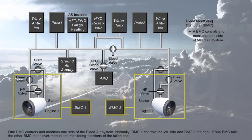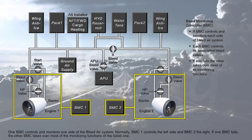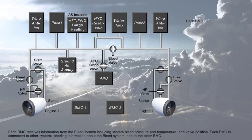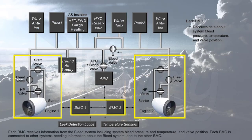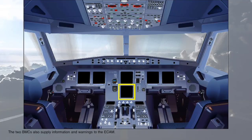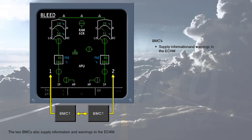One bleed monitoring computer controls and monitors one side of the bleed air system. Normally, BMC 1 controls the left side and BMC 2 the right. If one BMC fails, the other BMC takes over most of the monitoring functions of the failed one. Each BMC receives information from the bleed system including system bleed pressure, temperature, and valve position. Each BMC is connected to other systems needing information about the bleed system and to the other BMC. The two BMCs also supply information and warnings to the ECAM.